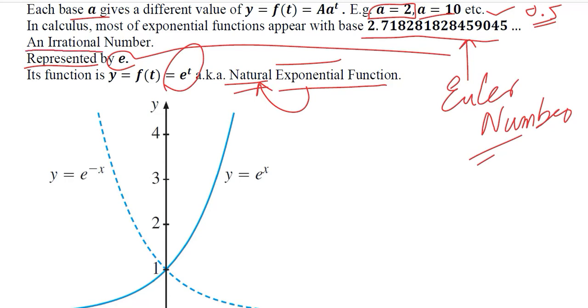And another observation is that this number, that is Euler number, is an irrational number. And you can consult your literature for what is an irrational number.